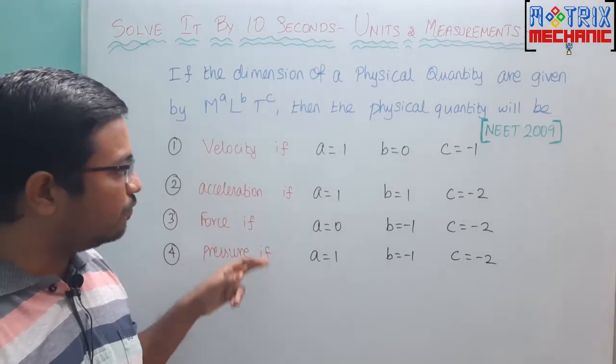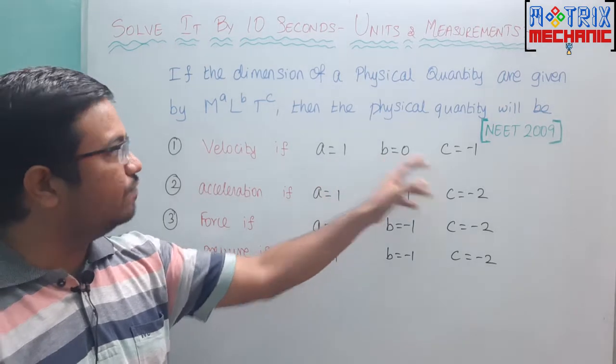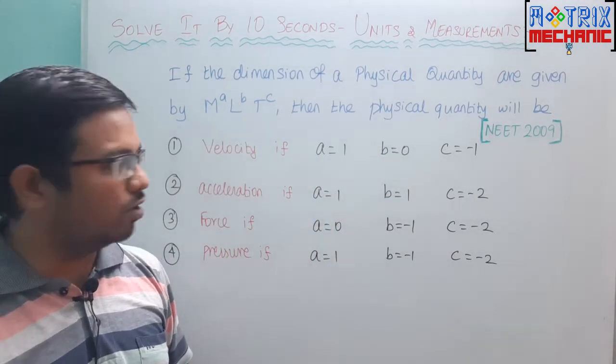They have provided four options: velocity, acceleration, force, and pressure. For each one, they have provided the values of the powers a, b, and c.